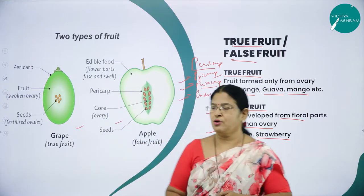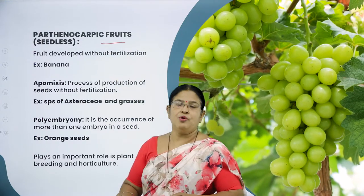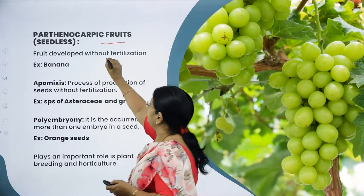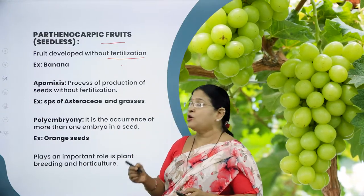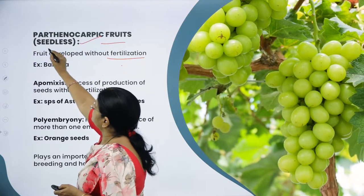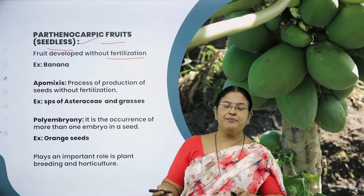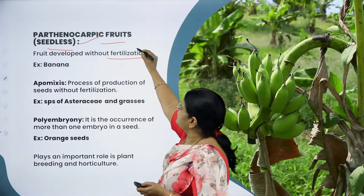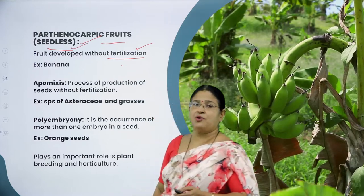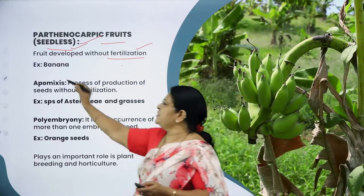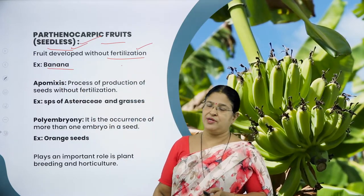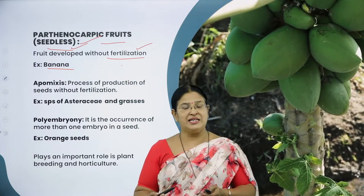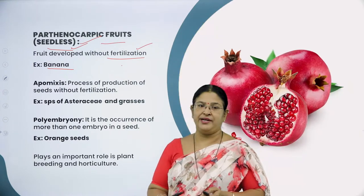Moving on to parthenocarpic fruits: fruits which are developed without fertilization — that is, the ovary develops into a fruit without fertilization — are called parthenocarpic fruits, otherwise called seedless fruits. The classical example is banana. We all prefer seedless fruit over seeded fruit, like seedless papaya, pomegranate, or grapes.